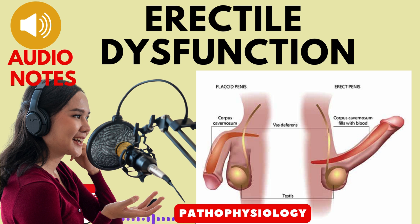Moving on to treatment options, addressing underlying causes is paramount. Drugs such as oral phosphodiesterase inhibitors are often prescribed, with vacuum erection devices or intracavernosal prostaglandins serving as second-line options. Surgical implants are considered in cases where other treatments fail. It's crucial to emphasize behavior modification, including lifestyle changes, weight loss, and psychological support.